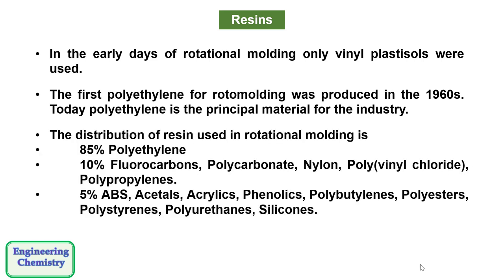The distribution of resin used in rotational molding is 85% polyethylene, 10% fluorocarbons, polycarbonate, nylon, polyvinyl chloride and polypropylenes. Remaining 5% is ABS, acetals, acrylics, phenolics, polybutylenes, polyesters, polystyrenes, polyurethanes and silicones.